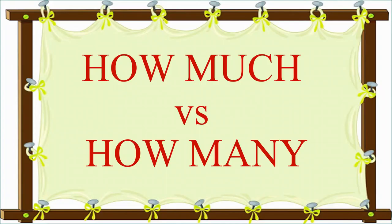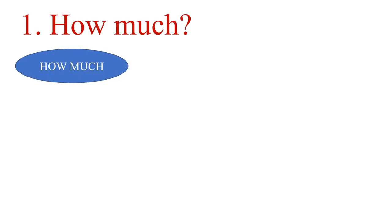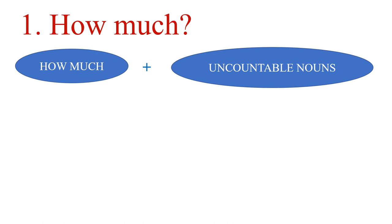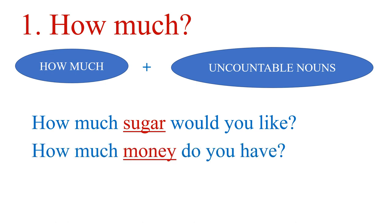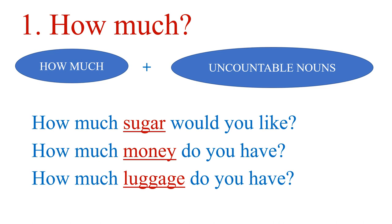When we want to know the quantity or amount of something, we ask questions starting with 'how much' and 'how many.' But what is the difference? Let's check. 'How much' is used with uncountable nouns. For example: How much sugar would you like? How much money do you have? How much luggage do you have? You see — sugar, money, luggage are uncountable nouns, so they go with 'how much.'